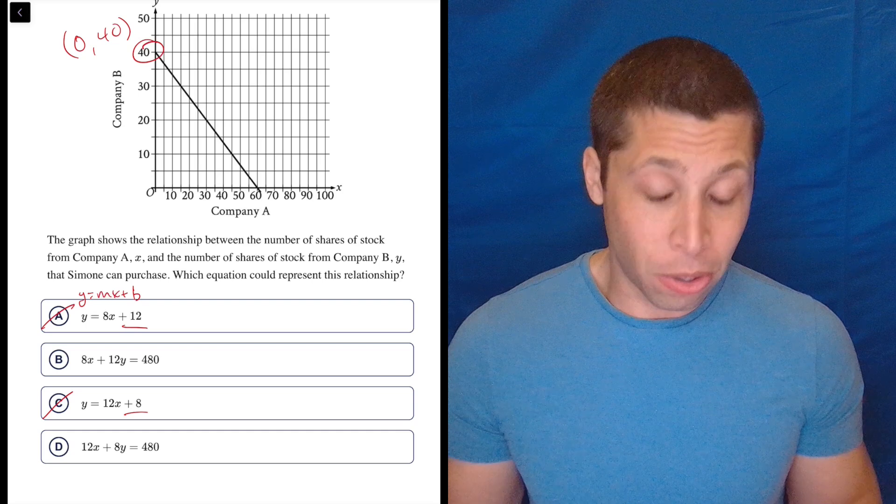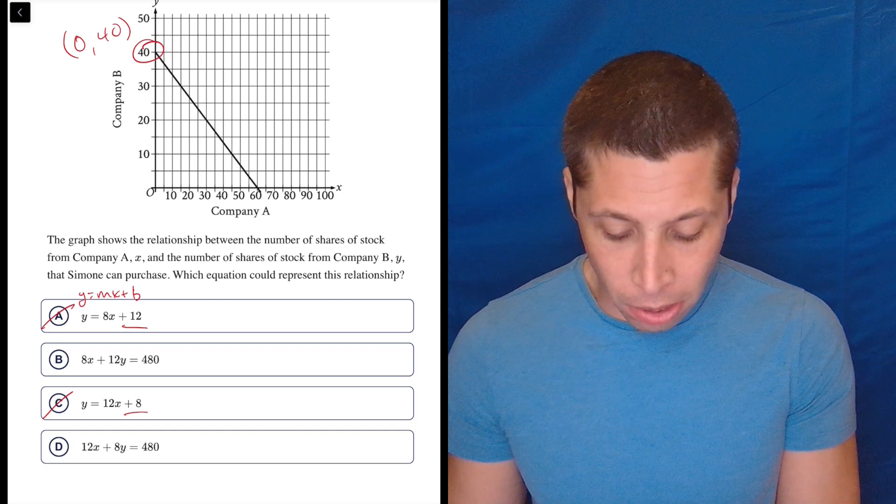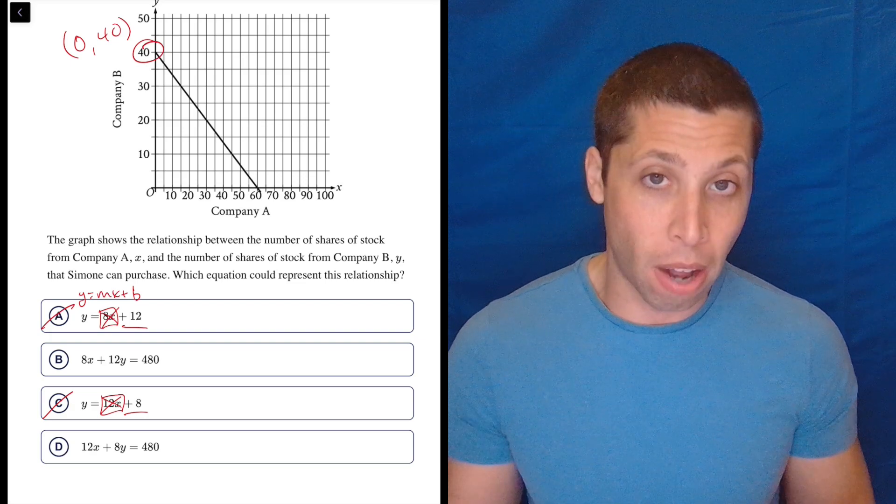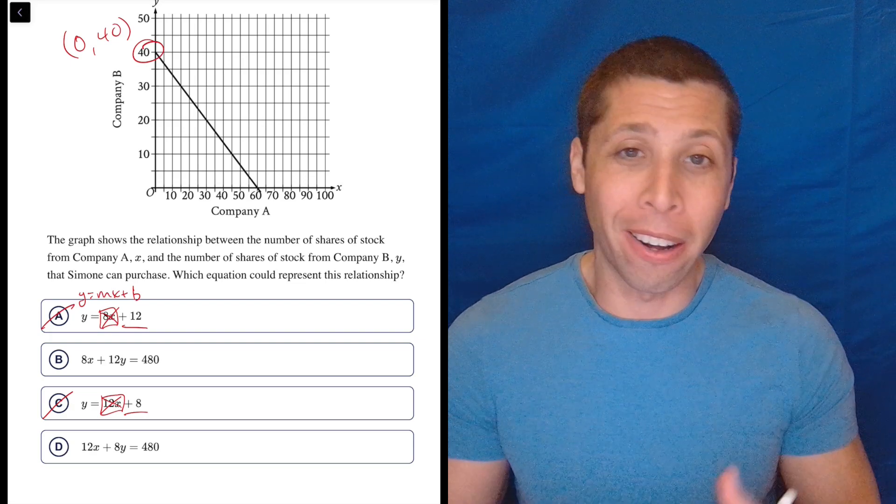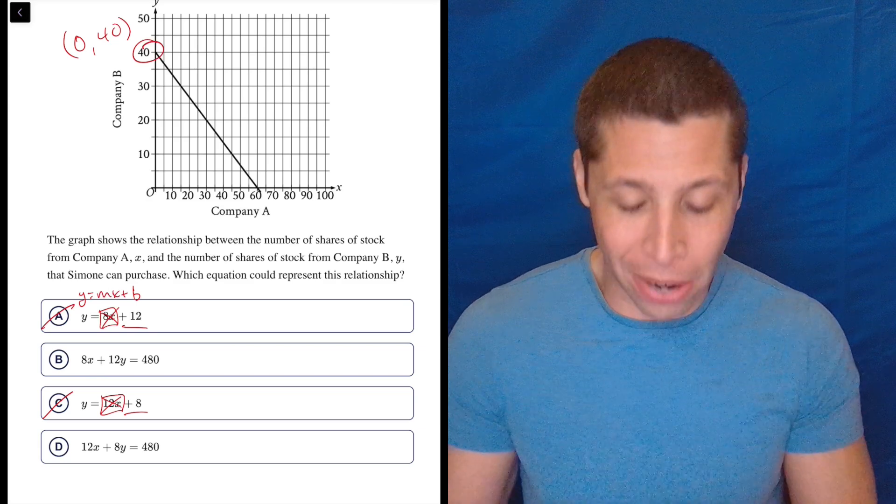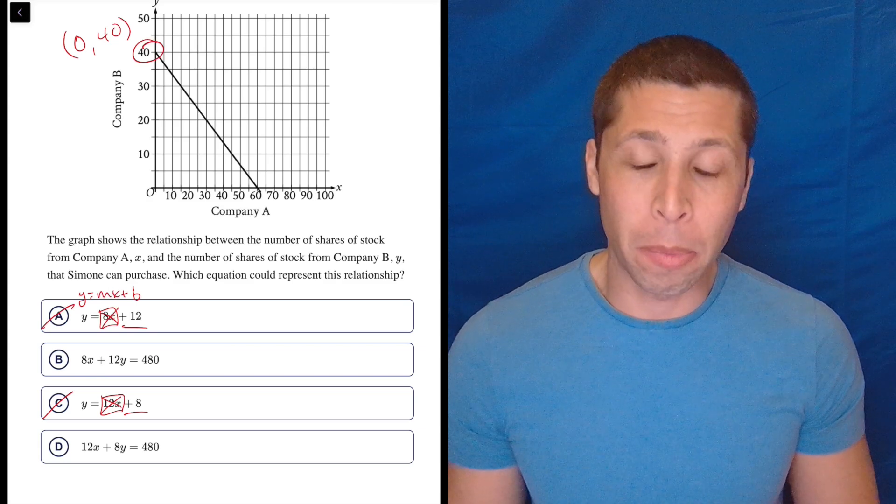But even still, if we just plug points into equations, what happens when you plug a 0 into this 8X? It kills it off. What happens if you plug in 0 at 12X? It kills it off. And that's why the B part of a line is the Y-intercept. It's what happens when you put in 0 for X.